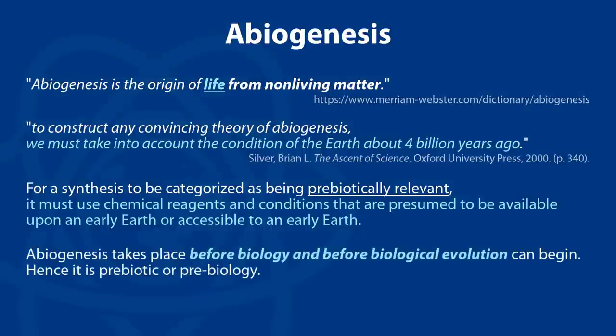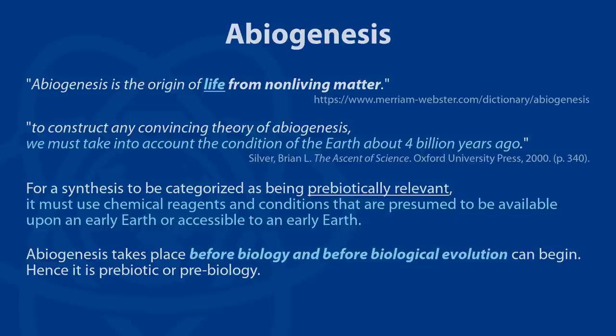It is not what we can do today. We've never made life today — we've never made a single cell. Nobody's ever made a cell ab initio from the bottom up. Abiogenesis takes place before biology, and before biological evolution can begin. Before that first cell can morph into other cells and start reproducing, it has to form. Evolution is taking something that has life and transforming it. This is before you ever had life — that's what abiogenesis is.